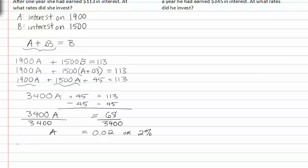If that's the case, B is equal to A plus .03 or 3 percent, which means that B is equal to 2 percent plus 3 percent or 5 percent.